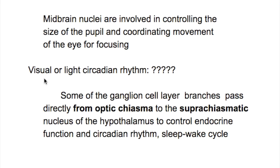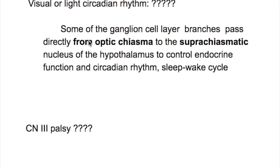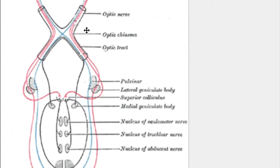For focusing visual or light circadian rhythm, some of the ganglion cell layer branches pass directly from the optic chiasma to the suprachiasmatic nucleus of the hypothalamus to control endocrine function, circadian rhythm, sleep-wake cycle, and endocrine production. As you can see here, this is the superior colliculus where optic nerve fibers arrive for visual reflexes, and here is the oculomotor nerve nucleus with fibers for pupillary constriction. A third set of fibers goes from the optic chiasma to the hypothalamus above that for the circadian rhythm.